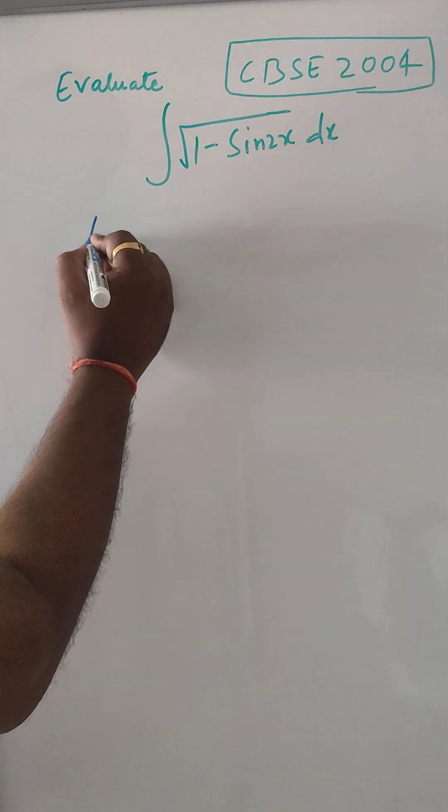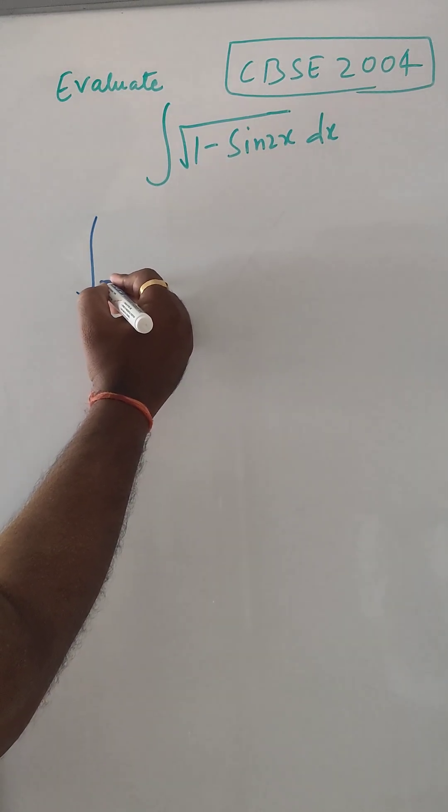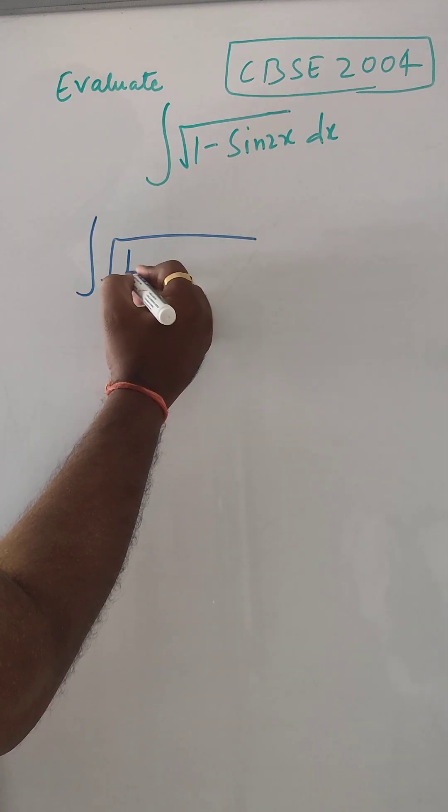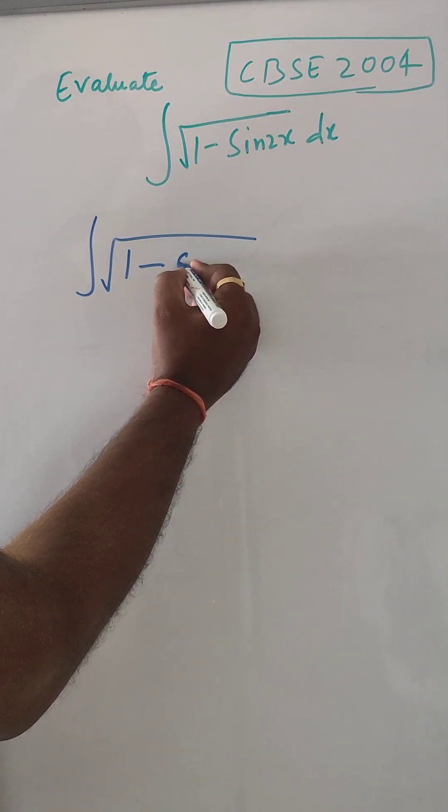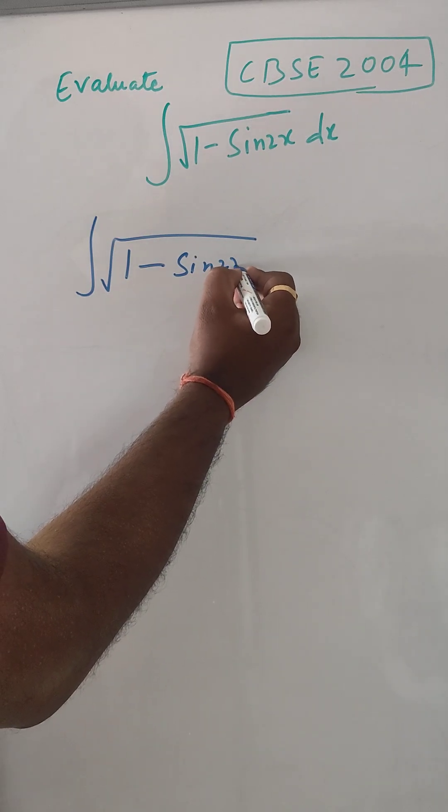So, the question here is, in indefinite integral, we have to find the integral of under root 1 minus sin 2x dx.